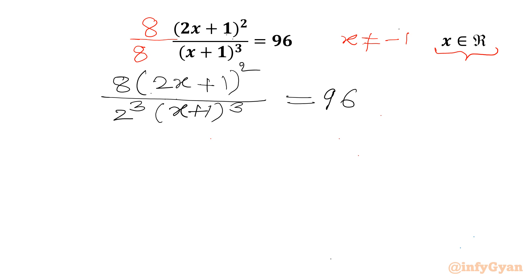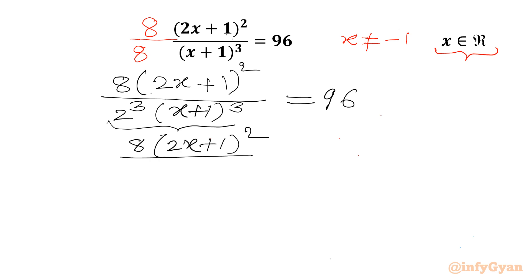Now I can club these two since the powers are the same. So I can write 8 times (2x + 1)² over (2(x + 1))³, and the RHS is 96.